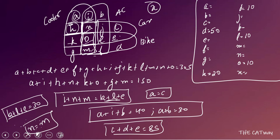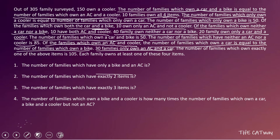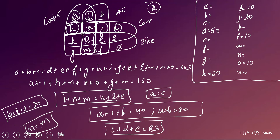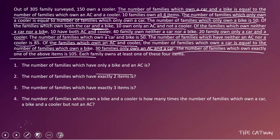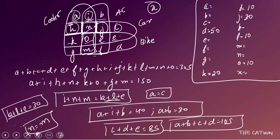30 families own only AC and a car — that region is J, where the cooler boundary and bike boundary both end — so J = 30. The number of families which own exactly one of the four items is 105, so A + B + C + D = 105. Each family owns at least one item, so X = 0.